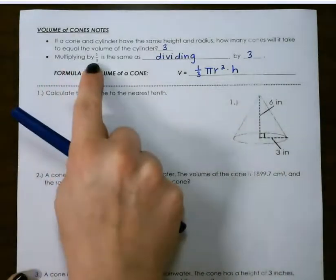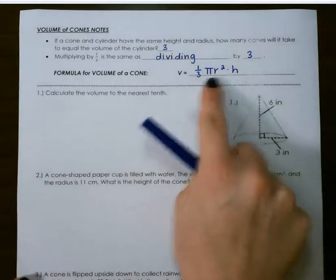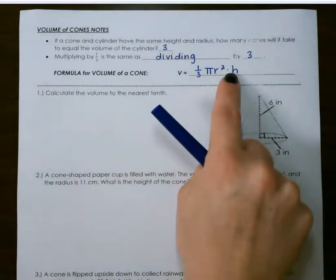Remember that multiplying by 1 third is the same as dividing by 3. Here's the formula for a cone: 1 third pi r squared times height.